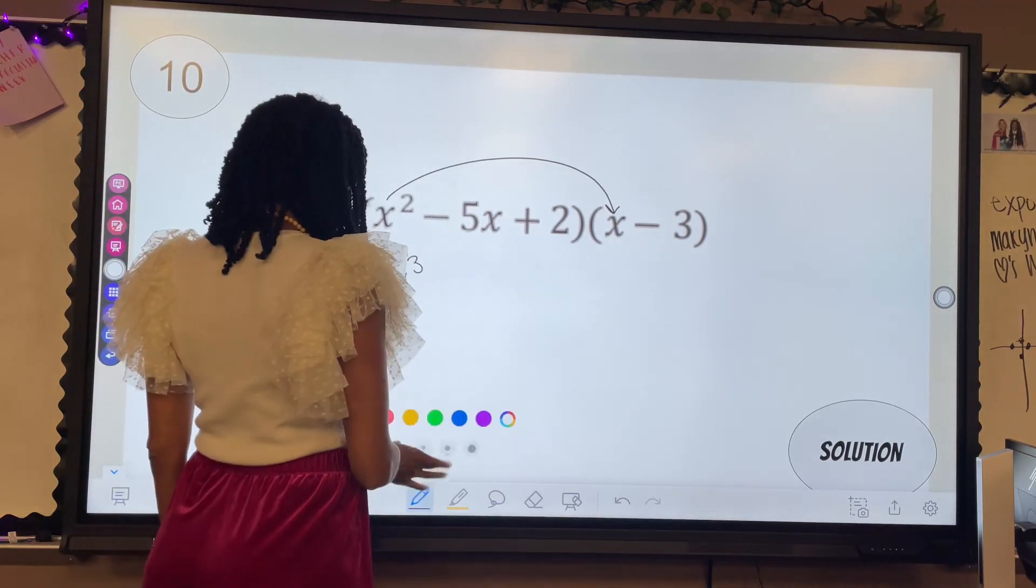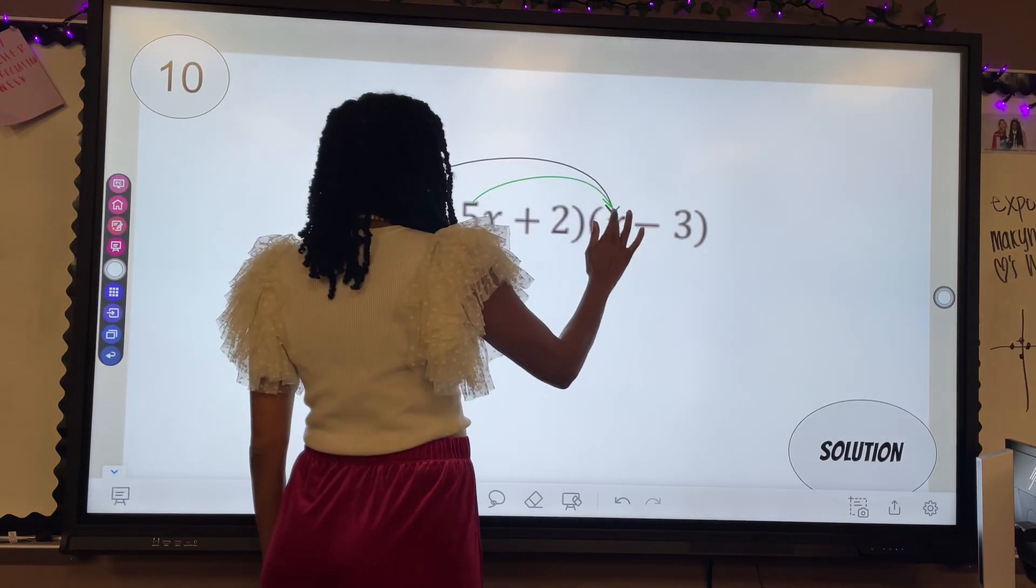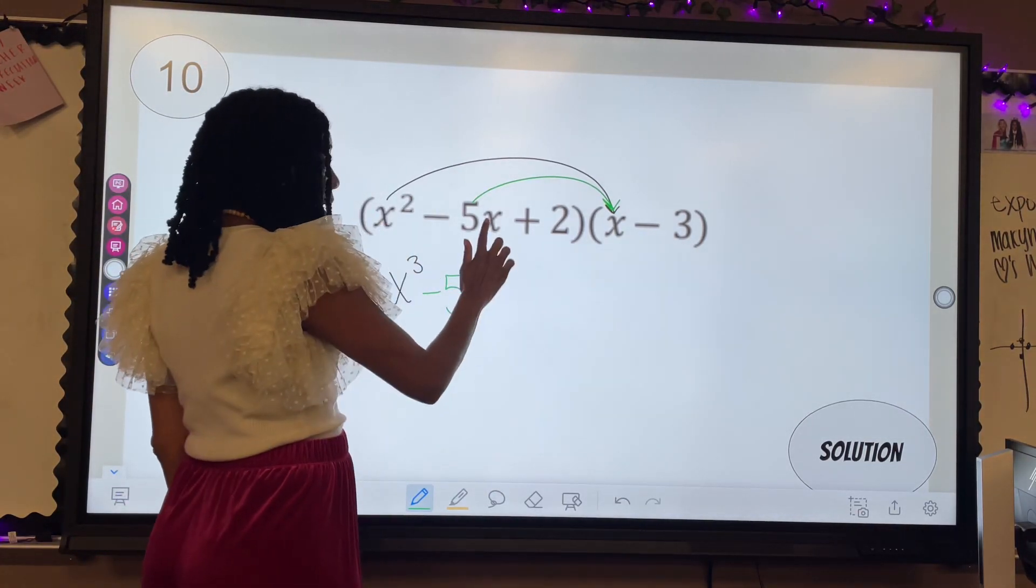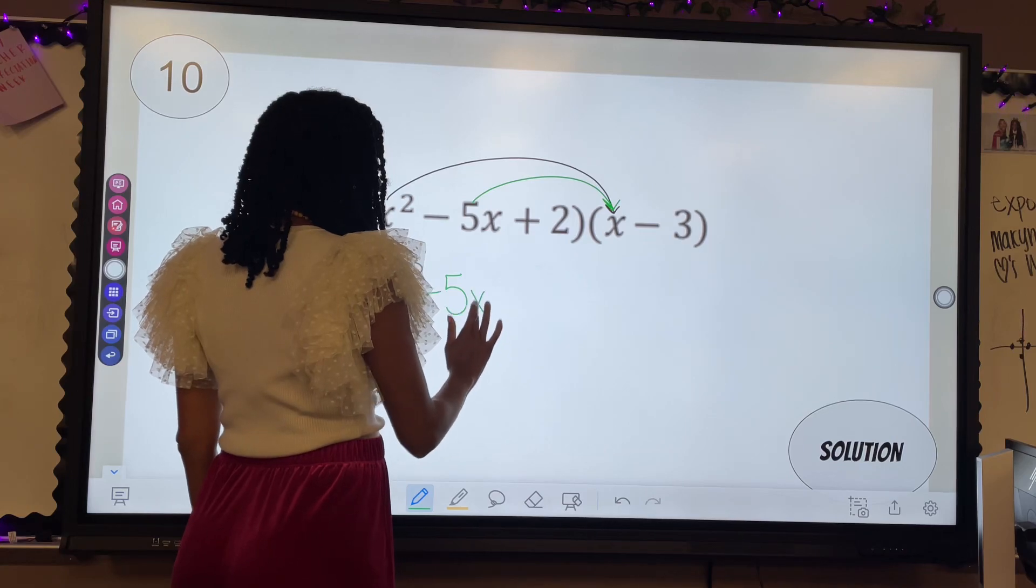Then I would do negative five times, five x times x. Again, you have to have that negative five. How many x's? One, two, so that is x squared.